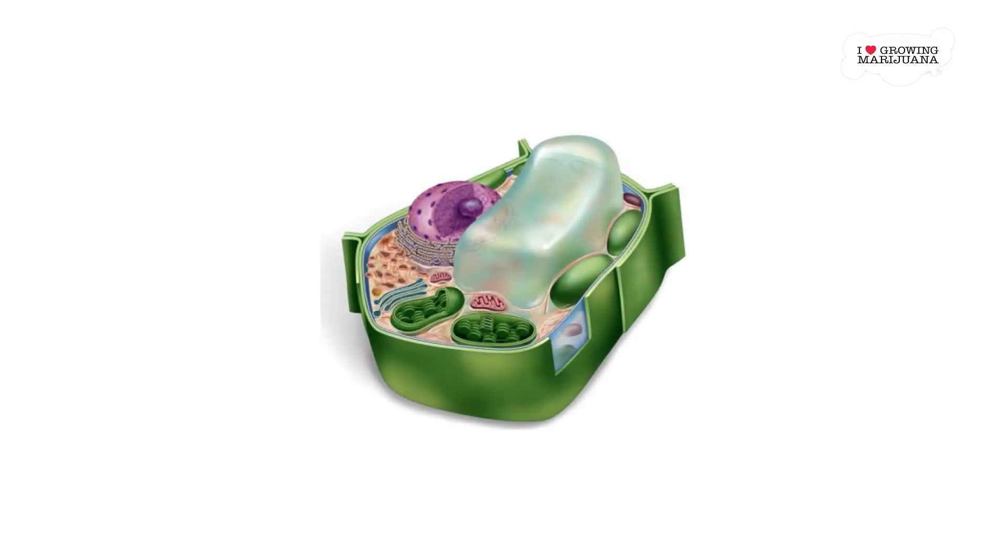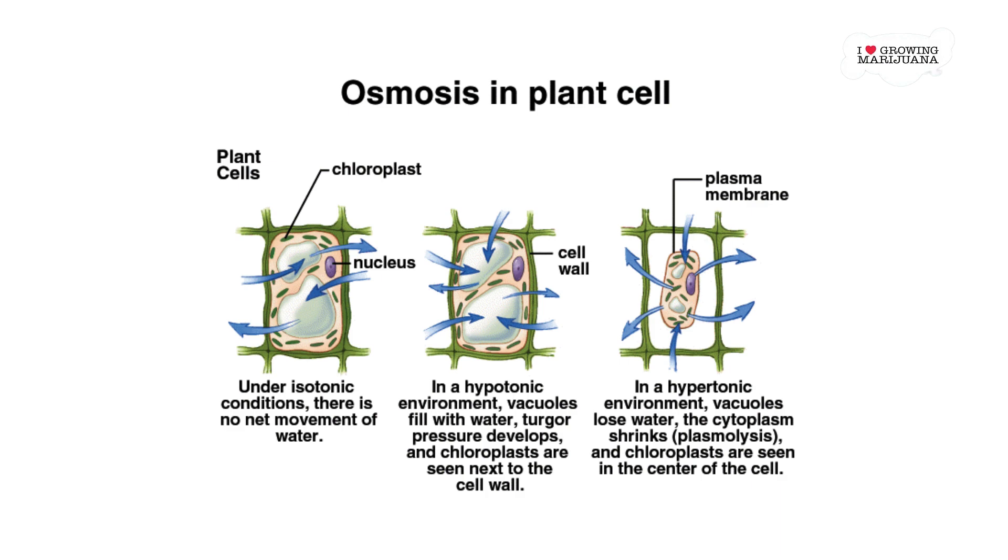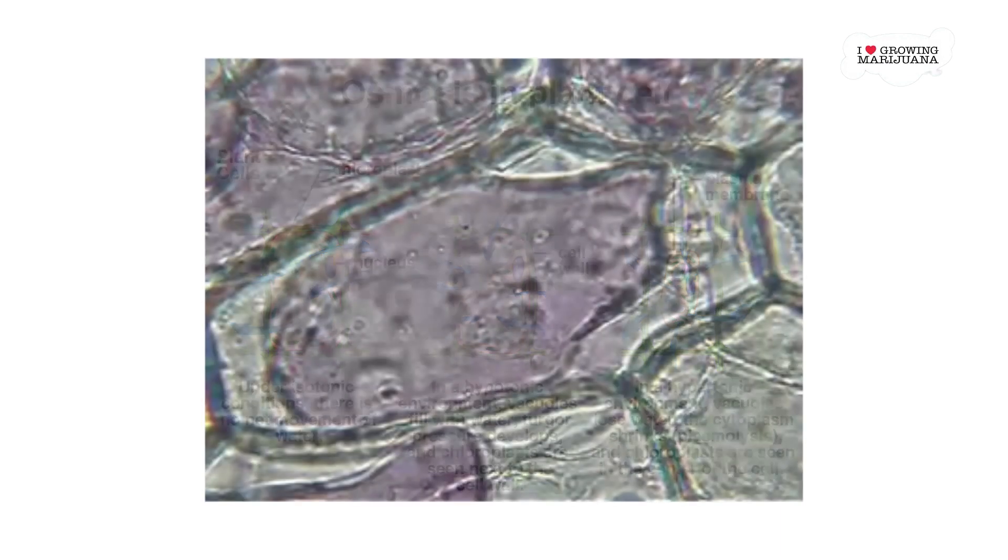Like vacuoles in the cell, every cell has a semi-permeable membrane as its exterior. These membranes let water through, but most solutes are blocked. Vacuoles function as storage for nutrients, sugars, proteins, and more.